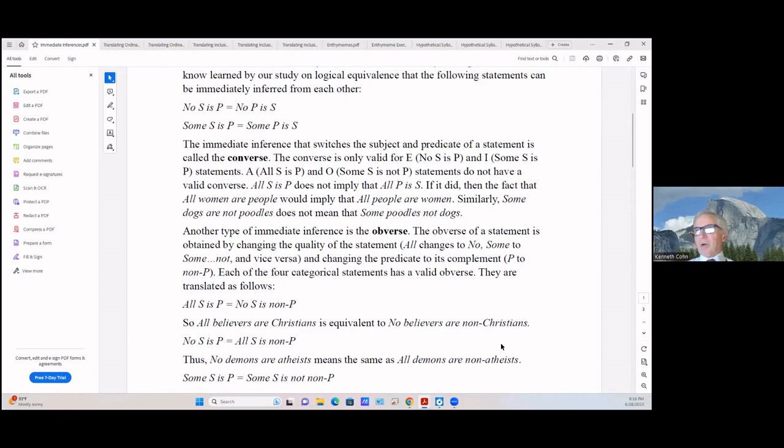Similarly, some dogs are not poodles—and that's an O form. Some dogs are not poodles, the O statement, does not mean that some poodles are not dogs. But they are the breeds. And we know that some poodles are not dogs—no, we know that all poodles are dogs—so it can't mean that some poodles are not dogs.